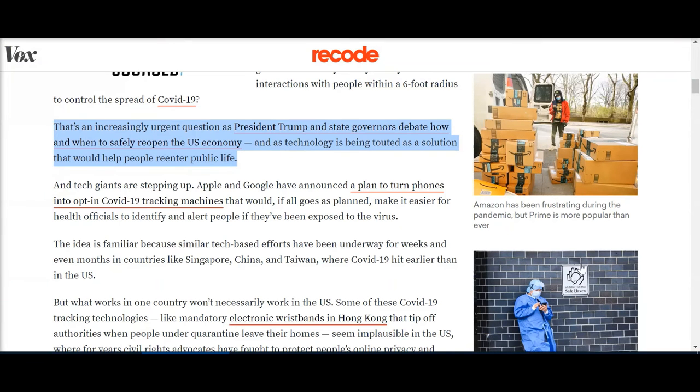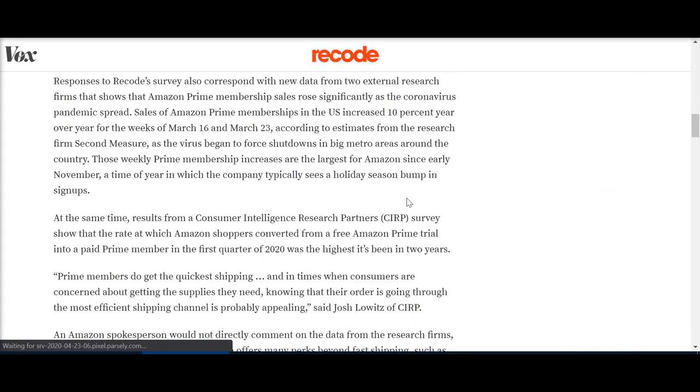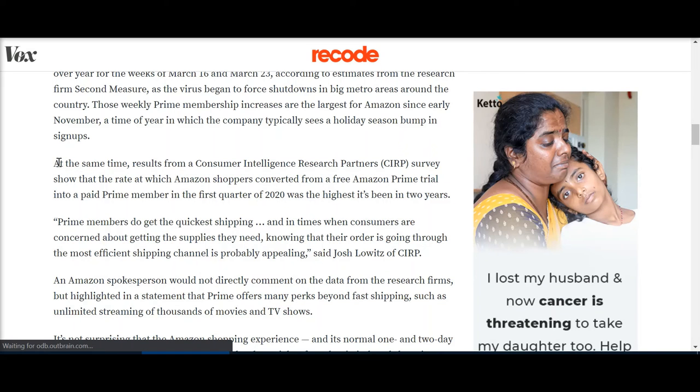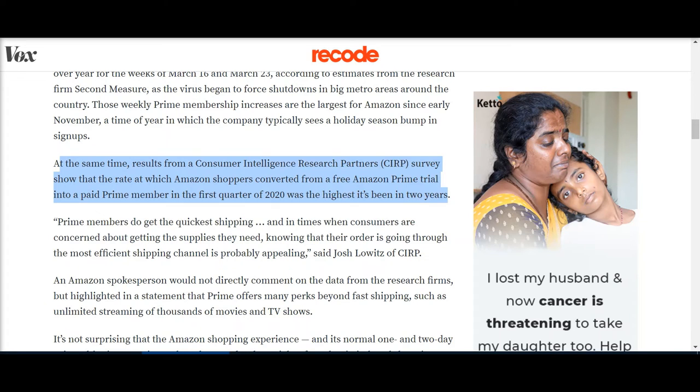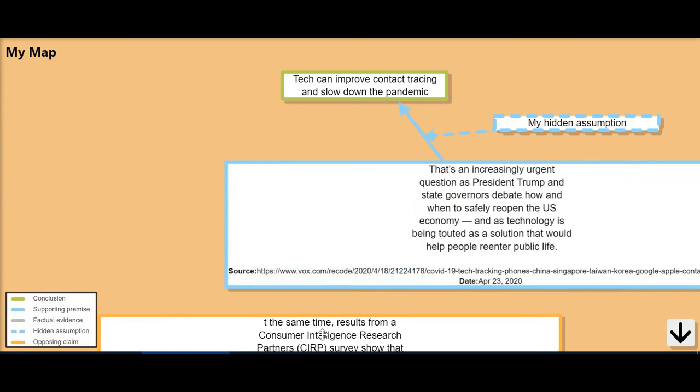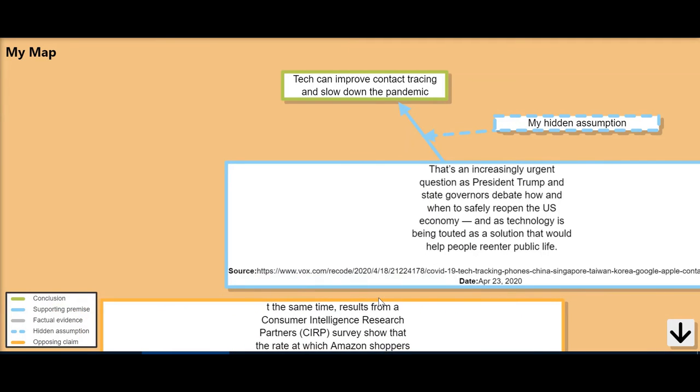Similarly, I could be reading a different source and from that source I can snip whatever I find interesting, right-click, go to the argument mapper, and add it to my map as an opposing claim. Again, I have this information with where I picked it up from, the date of access, and I add it as an opposing claim.